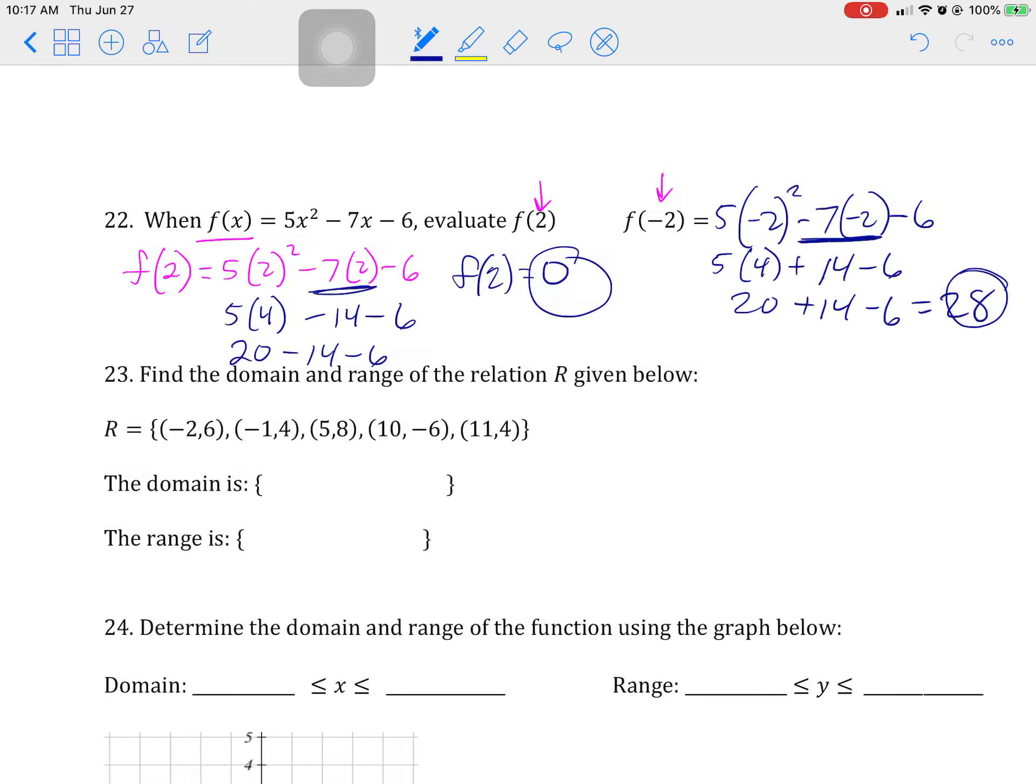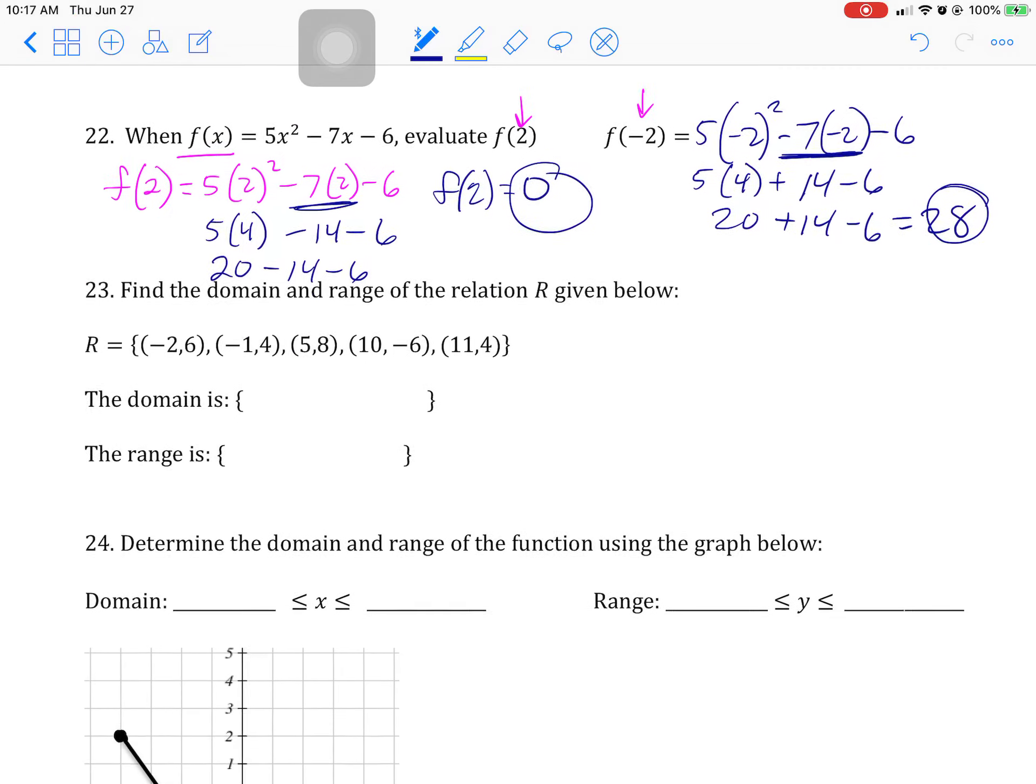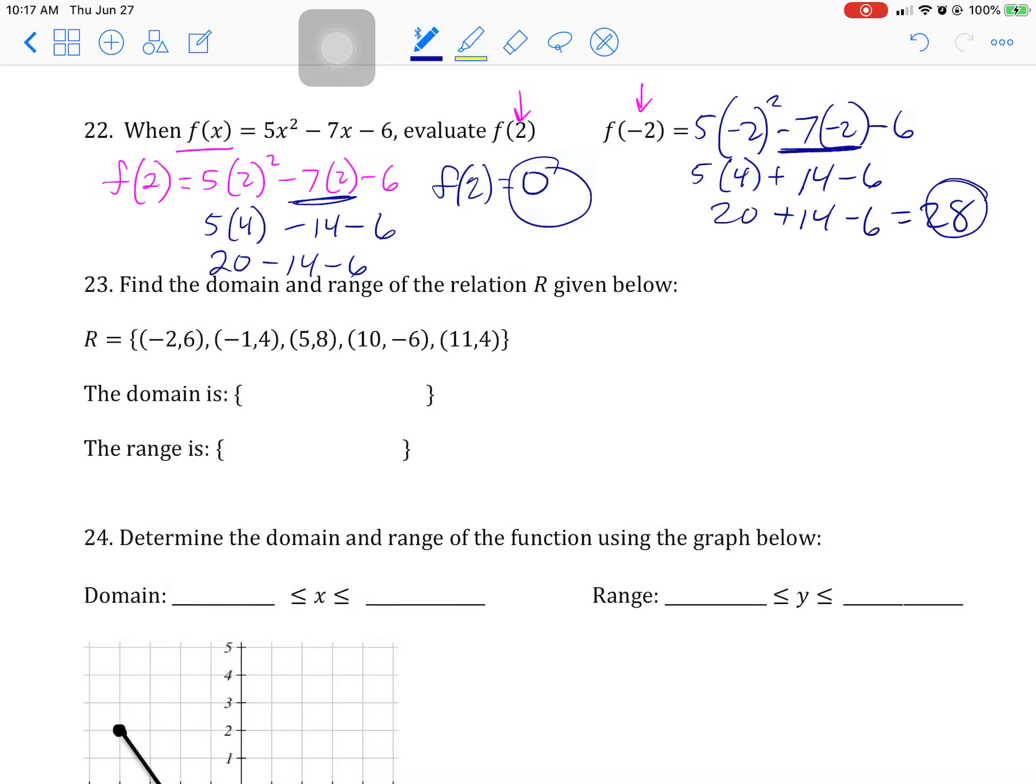And then, domain and range of the relation below. So it's a function because all of the X's are different, so we don't have to worry about them going to two different Y's. That's a function. And the domain is always the first one, so everything I underlined. The range is all the Y's.